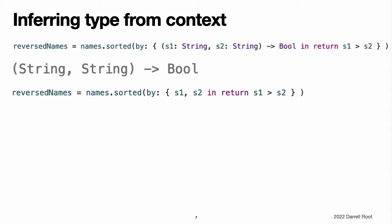Nonetheless, you can still make the types explicit if you wish, and doing so is encouraged if it avoids ambiguity for readers of your code. In the case of the sorted-by method, the purpose of the closure is clear from the fact that sorting is taking place, and it is safe for a reader to assume that the closure is likely to be working with string values because it is assisting with the sorting of an array of strings.